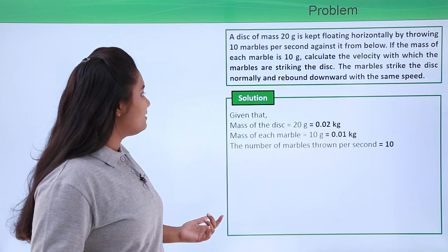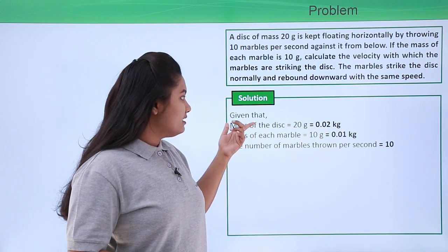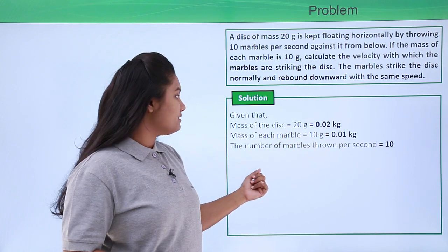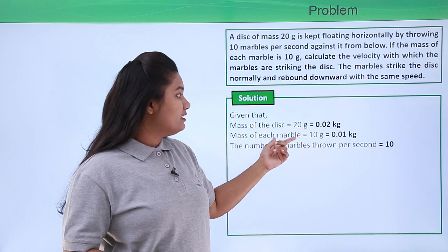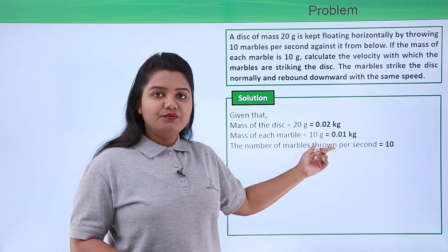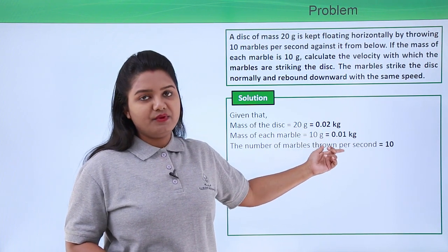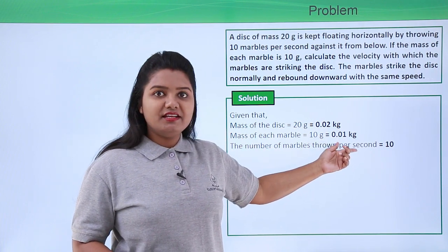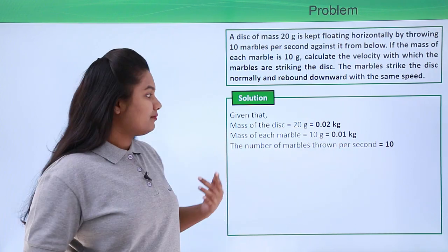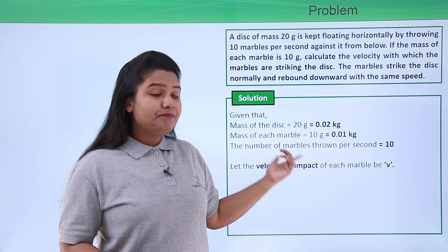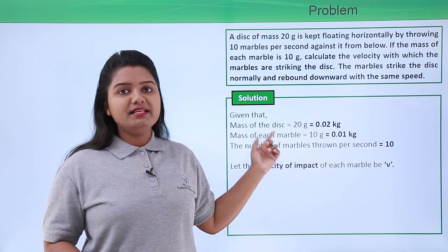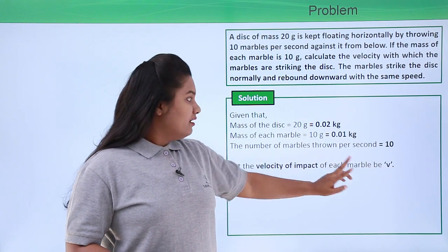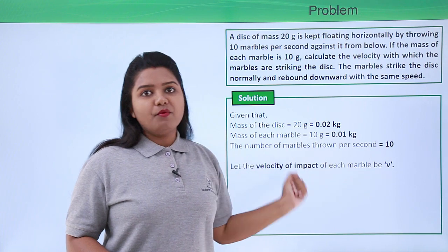First of all let us list out whatever is given in the question. The mass of the disk is given to be 20 grams, which is 0.02 kilograms. The mass of each marble is given to be 10 grams, which equals 0.01 kilograms. The number of marbles thrown per second is given to be 10 marbles. Let the velocity of impact of each marble be v.